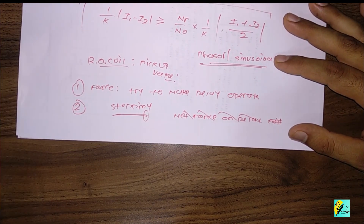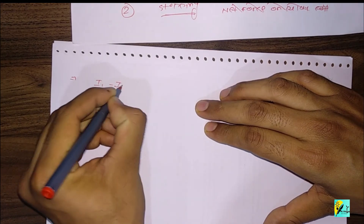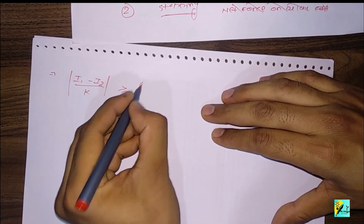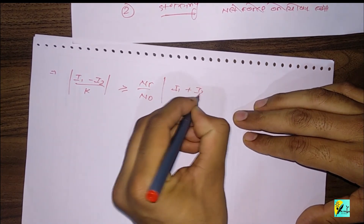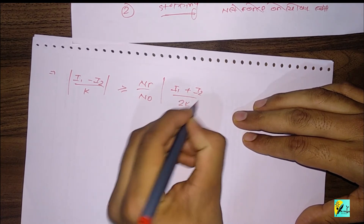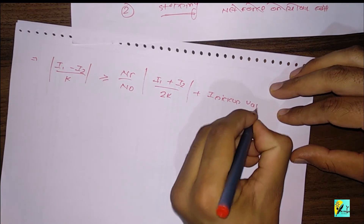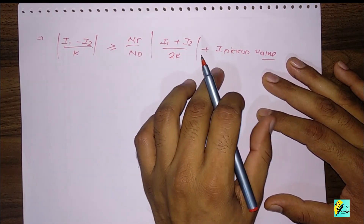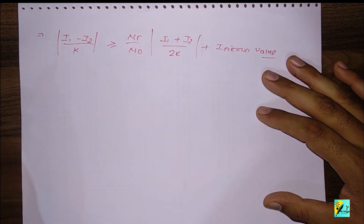So the net force on the relay coil should be more than the pickup value, and then the relay may get operate. We can write: (I1 minus I2)/k should be greater than (Nr/N0) multiplied by (I1 plus I2)/(2k) plus I_pickup. The operating force should be more than the restraining force by an amount equal to the pickup value.